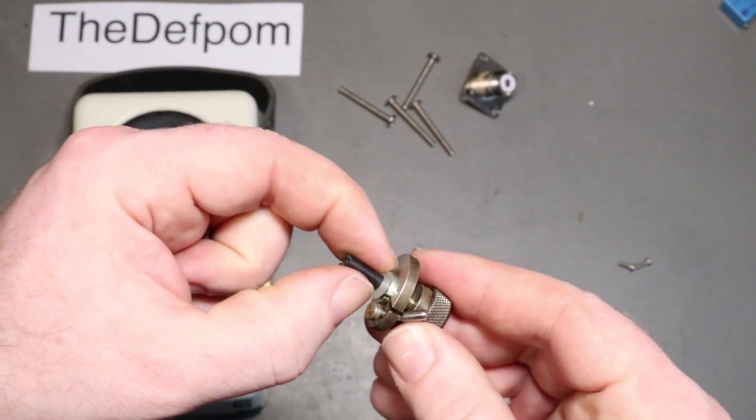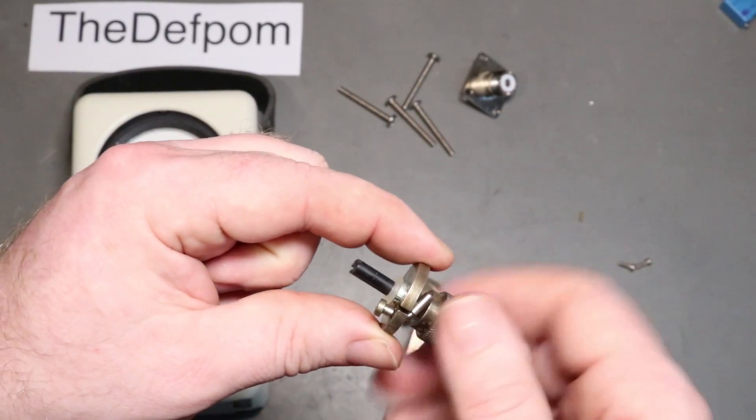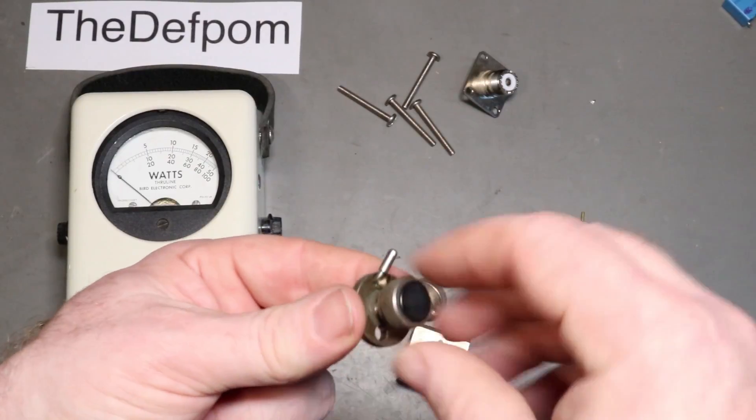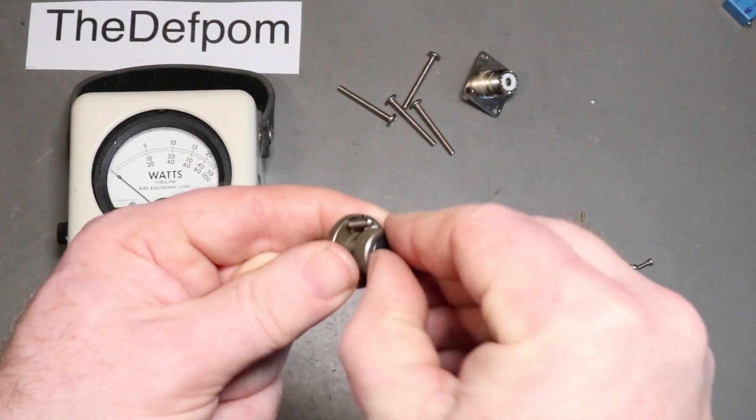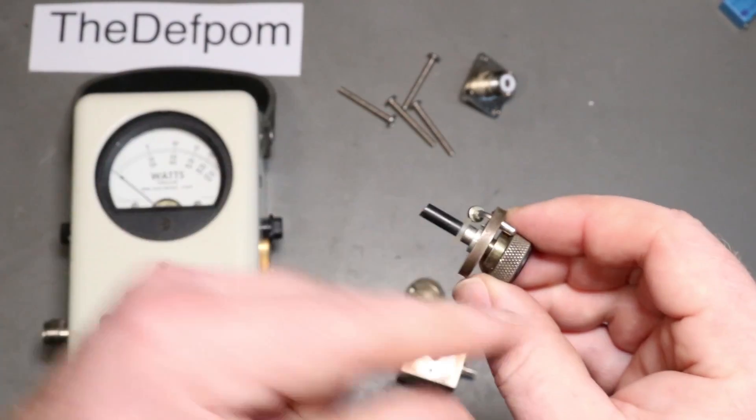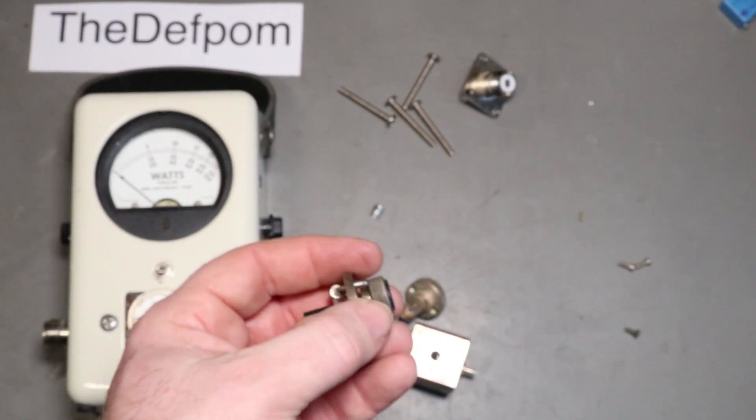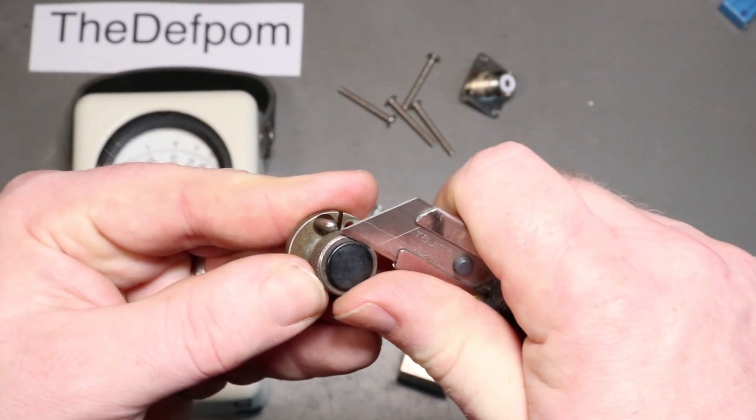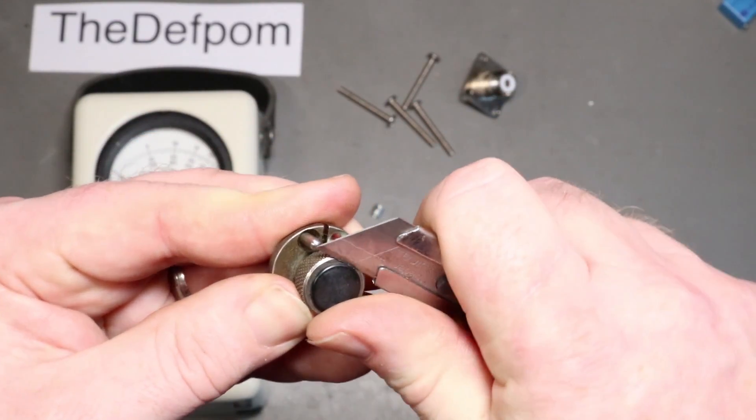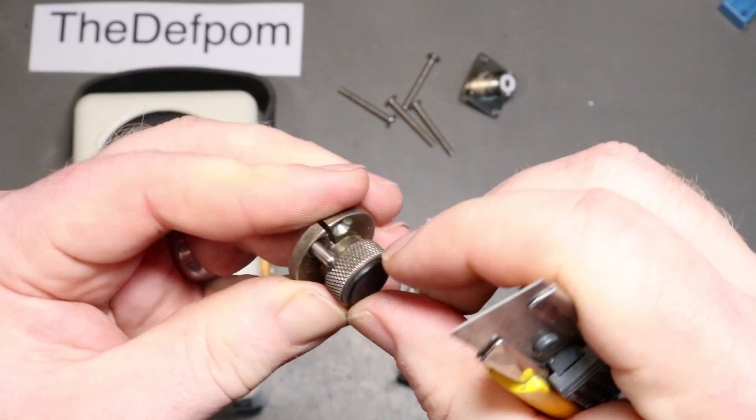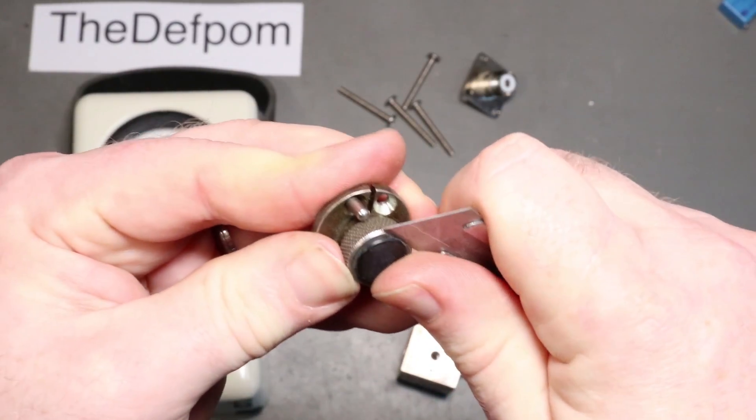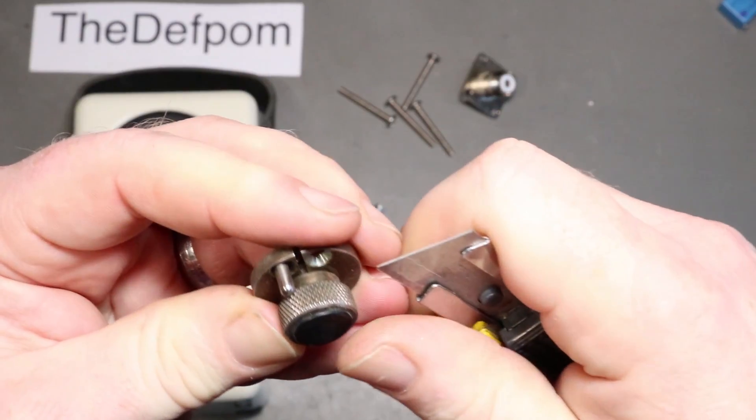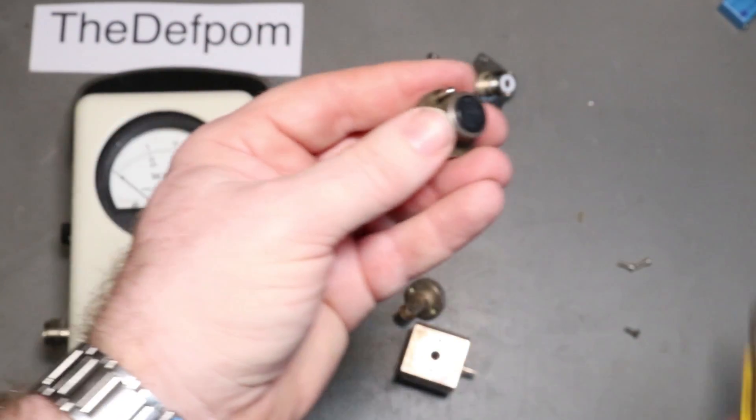I could probably just disassemble this some more and take the cap off, for example, and that'll probably get me to the end of that shaft. Let me see if I can get that cap off. I don't want to damage it. No, it's pushed on pretty well. I'll leave that alone.